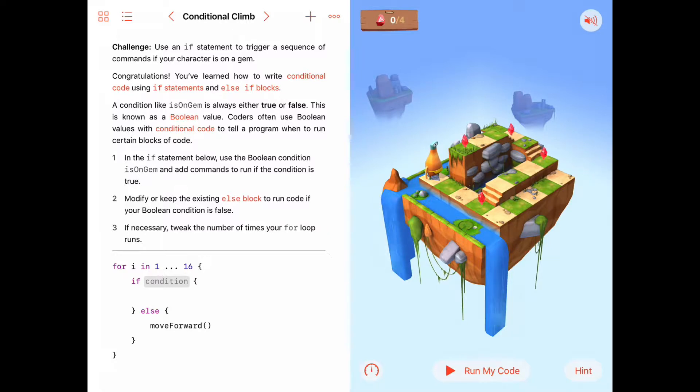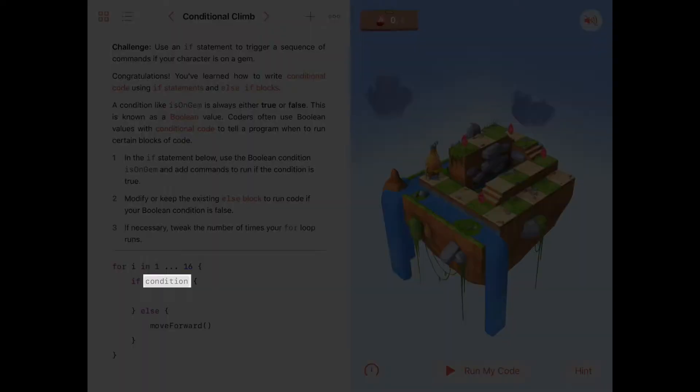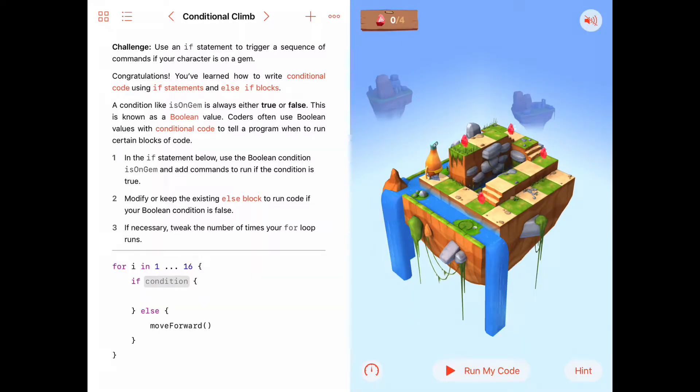We've up to this point been using this idea of conditional statements. In Swift they're called if statements, and inside those if statements there are conditions like is on gem or is on a closed switch. These represent what we call Boolean values, and a Boolean value can either be true or it can be false at any given time. It can only be those two values.